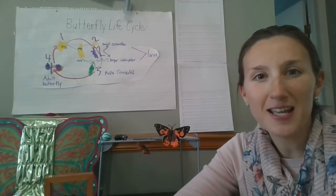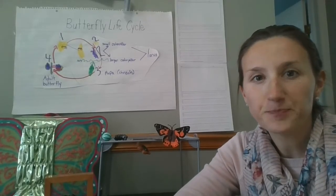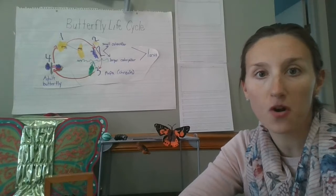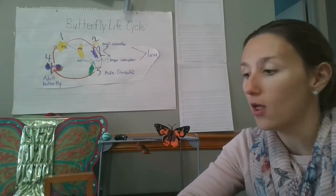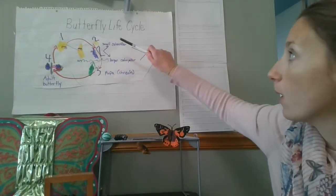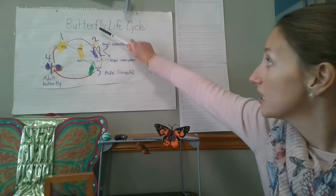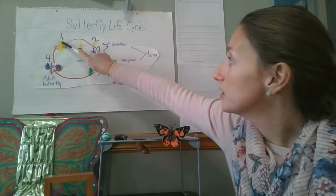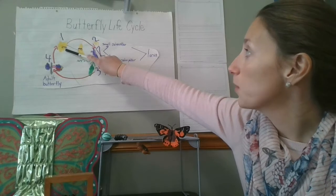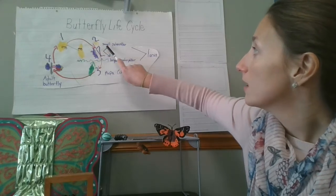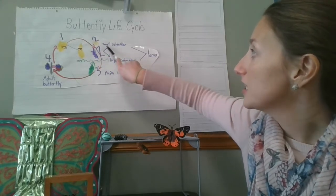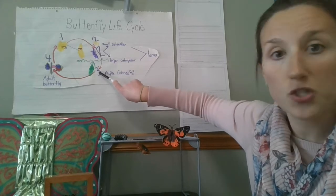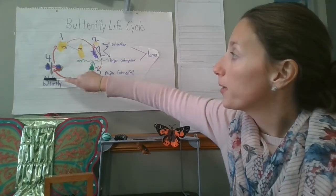Hi first grade, it's Mrs. Klein again. Hopefully you have a drawing of the butterfly life cycle. I posted mine up here on the wall. I gave it a title — it says 'butterfly life cycle' — and here you can see the eggs for stage one, the caterpillar for stage two, the chrysalis or pupa for stage three, and the adult butterfly for stage four.